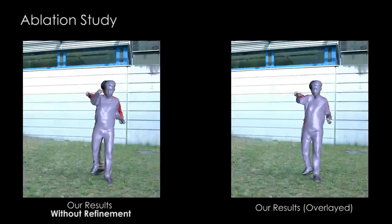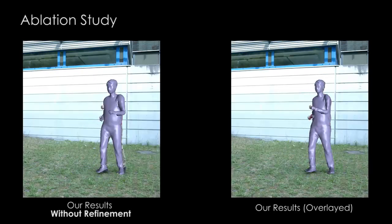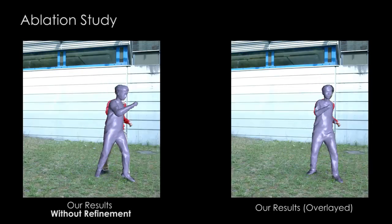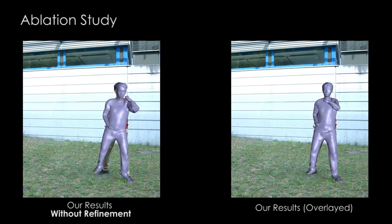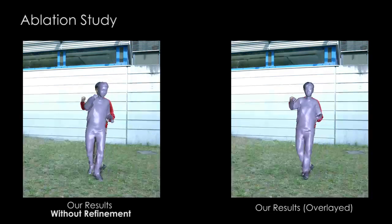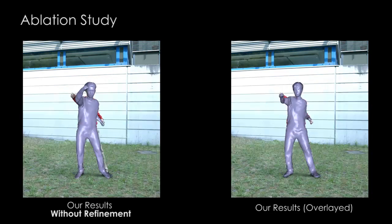To evaluate the importance of our domain adaptation step, we show a side-by-side comparison overlaid on the input frames. A pre-trained model achieves a good accuracy, but the domain adaptation step further improves the overlay, as our networks can learn to adapt to the different lighting effects and the camera-specific response functions that were not captured in the studio.